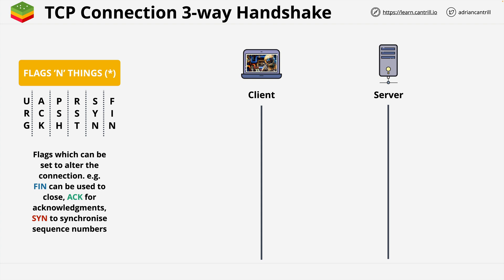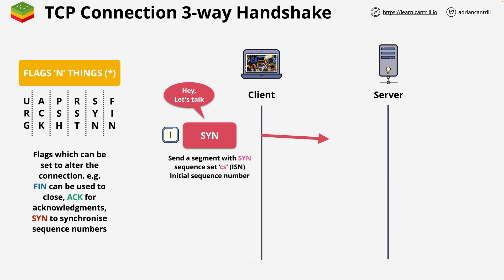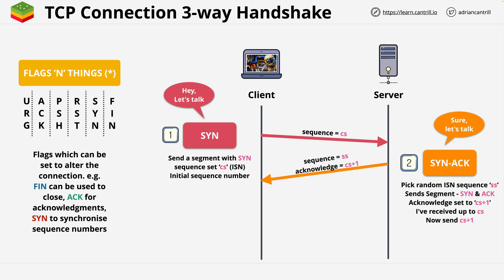Step one is that a client needs to send a segment to the server. This segment contains a random sequence number from the client to the server — unique in this direction of travel. This sequence number is initially set to a random value known as the ISN, or initial sequence number. You can think of this as the client saying to the server, hey, let's talk, and setting this initial sequence number. The server receives this segment and needs to respond, so it also picks its own random sequence number, referred to as SS.